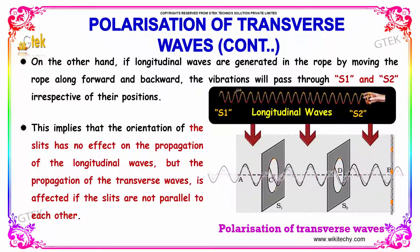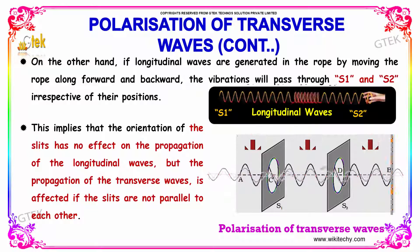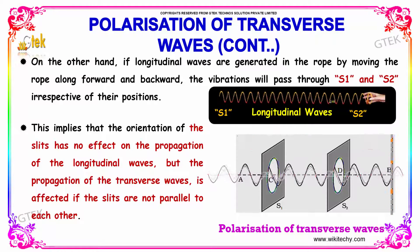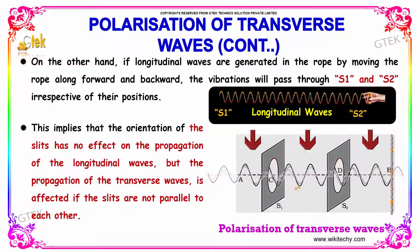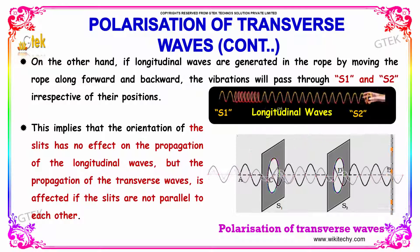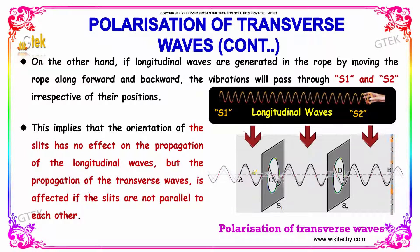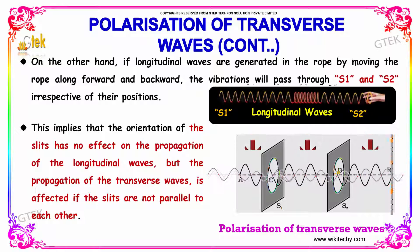On the other hand, if longitudinal waves are generated in the rope by moving the rope forward and backward, the vibration will pass through S1 and S2 irrespective of their position. This implies that the orientation of the slits has no effect on the propagation of longitudinal waves. But the propagation of transverse waves is affected if the slits are not parallel to each other.